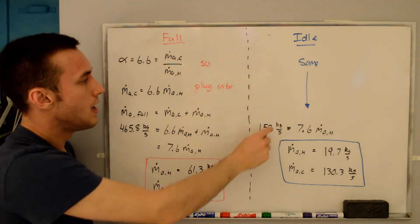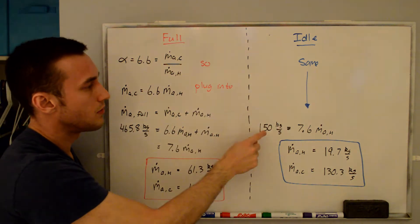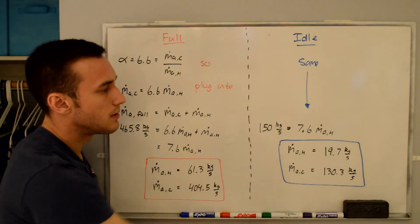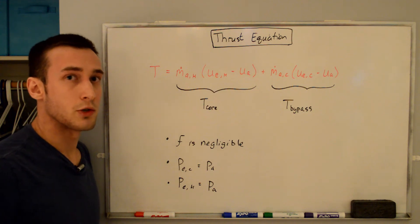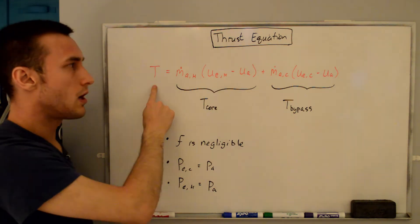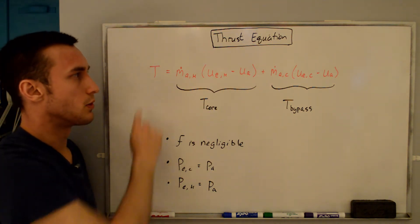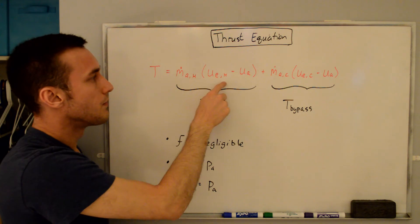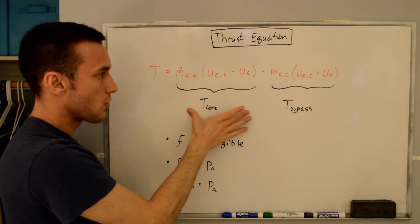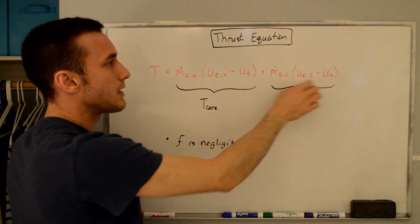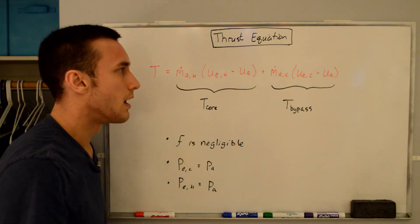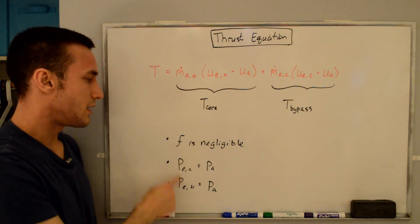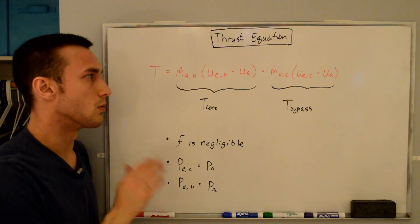We can do the same for idle thrust: M_A idle equals 150 kg/s equals 7.6 × m_AH, giving m_AH equals 19.7 kg/s and m_AC equals 130.3 kg/s. The thrust equation we'll use states that the total thrust in the x-direction equals the core mass flow rate times (core exit velocity minus flight velocity) plus the bypass mass flow rate times (bypass exit velocity minus flight velocity). We're assuming the fuel-to-air ratio is negligible and that exit static pressures equal ambient pressure.